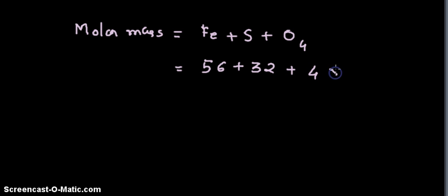The molar mass is equal to the sum of atomic masses of Fe, then sulfur, and O4. So we will write the atomic mass of Fe, 56, then sulfur is 32, and we have 4 oxygen atoms, so 4 into 16. As such, we get total as 56 plus 32 plus 64, that is equal to 152.